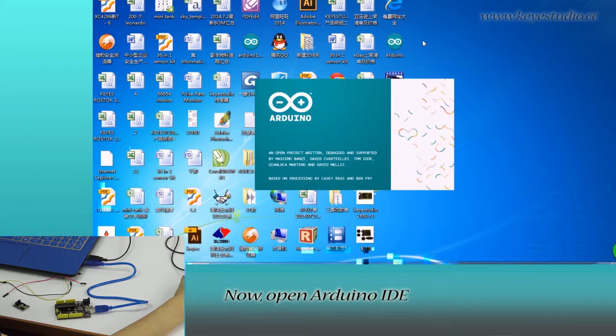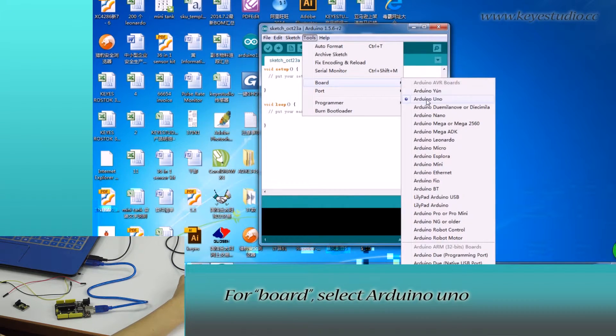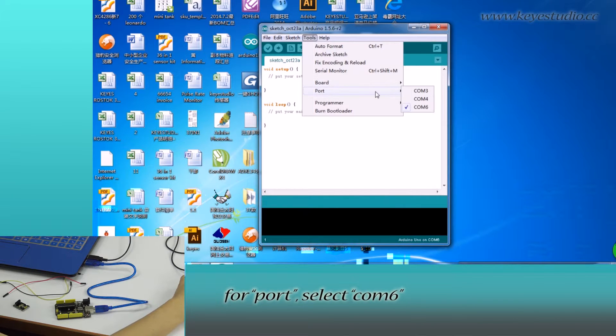Now, open Arduino IDE, click Tools. For Board, select Arduino Uno. For Port, select COM6. The same with the settings in Device Manager.